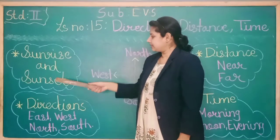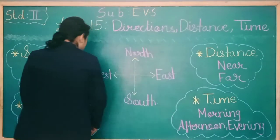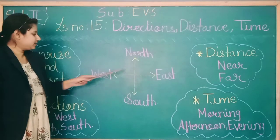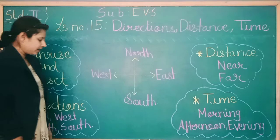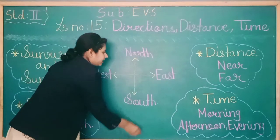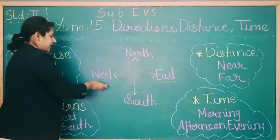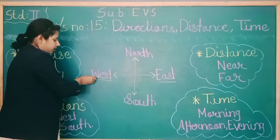Sunrise and sunset. Now students, you can see here I have drawn a diagram with east, west, north, and south. The sun rises here in the east and sets down in the west.